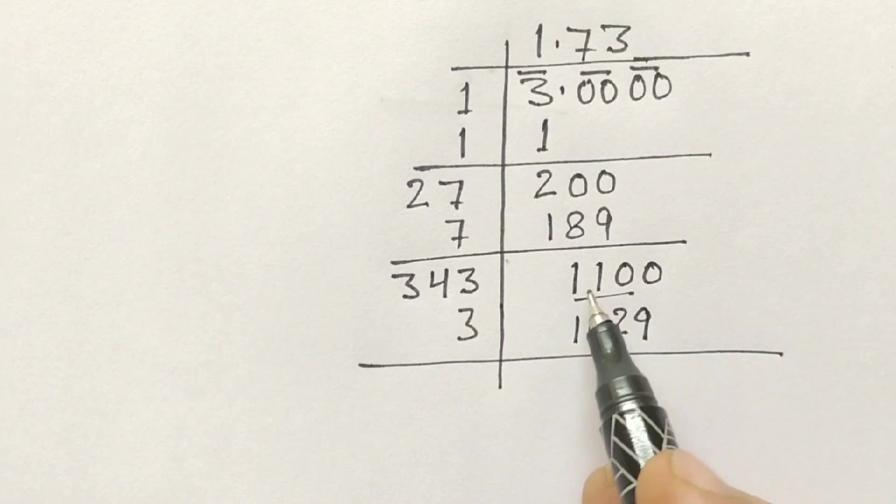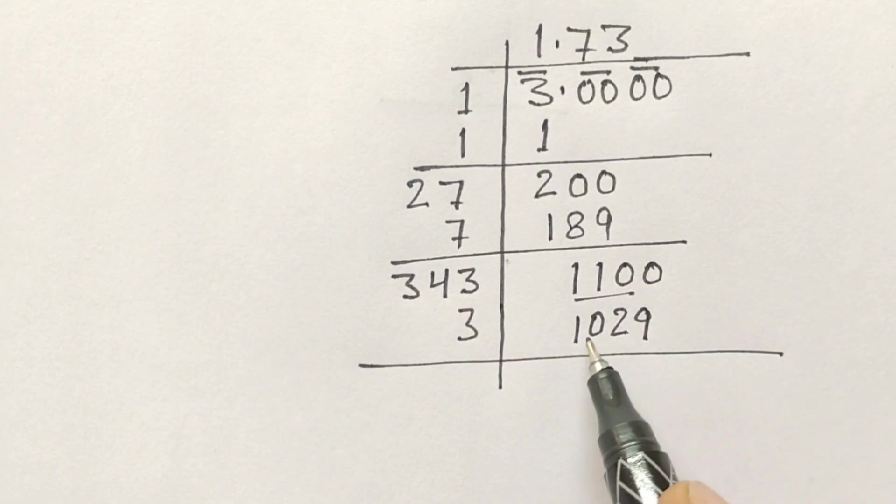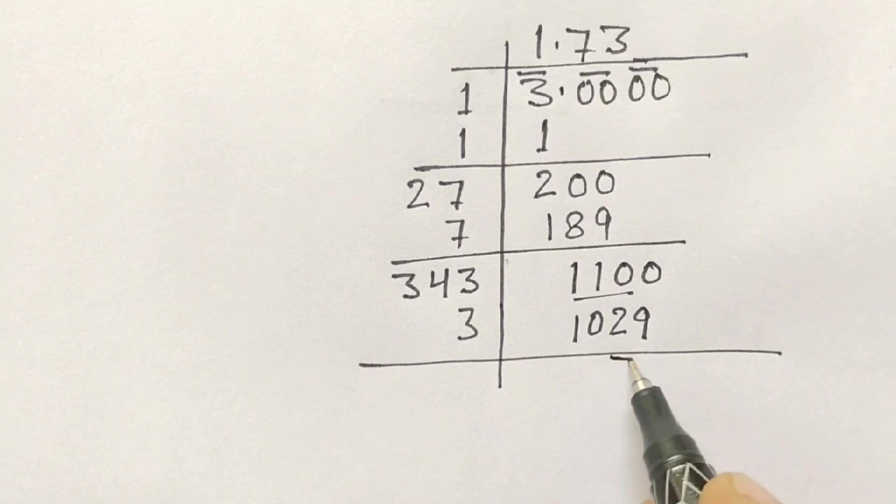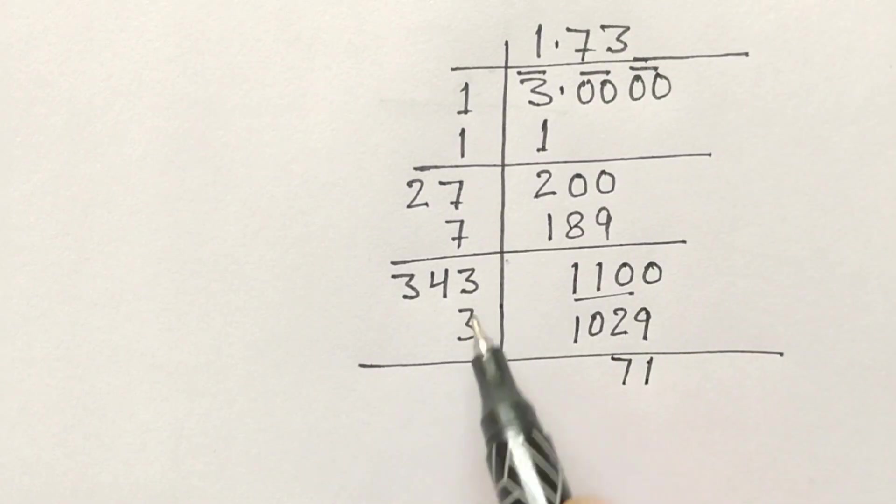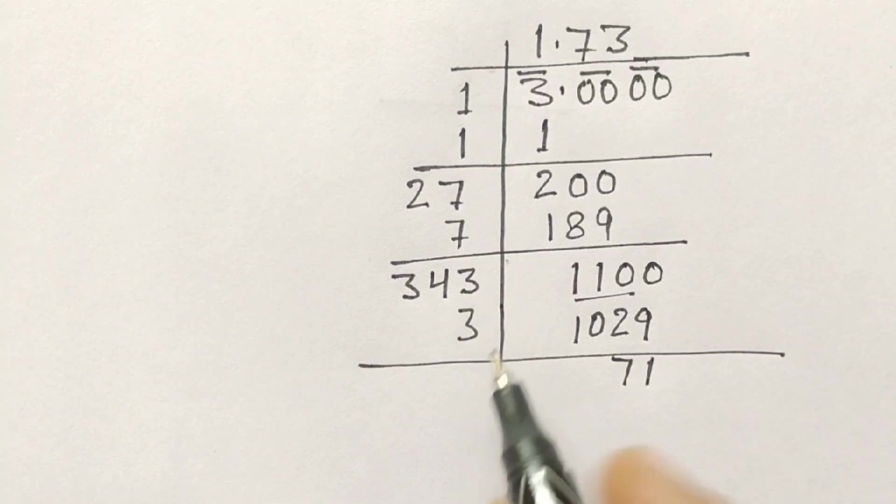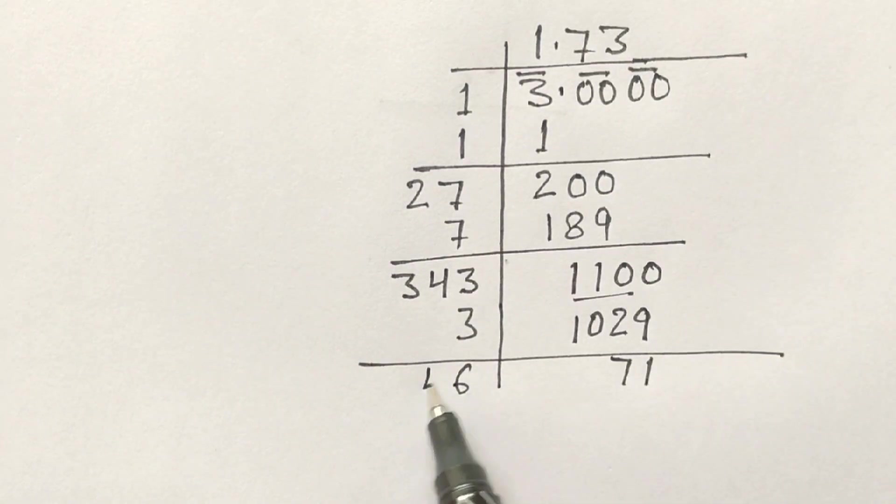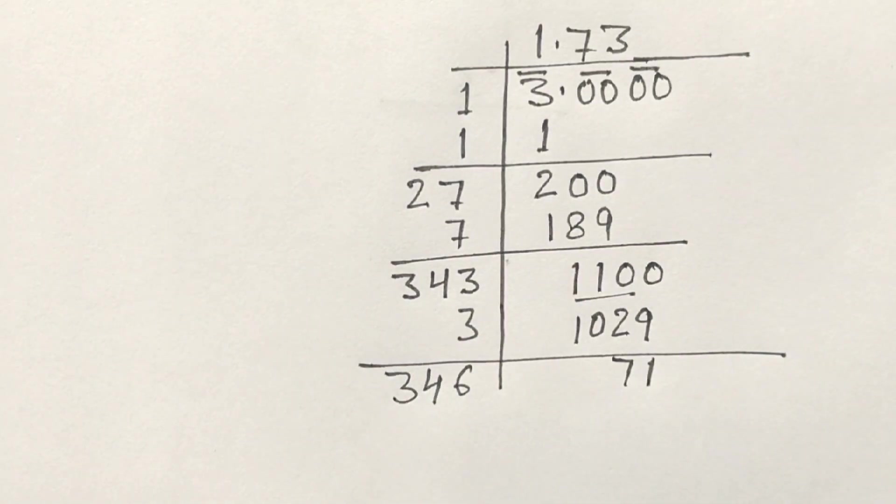Now 1100 minus 1029, what will remain? 71. So here we will add 3 and 3, 6, 343.